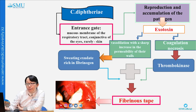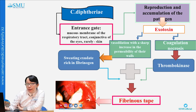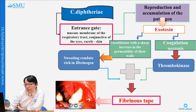Entrance gates are the mucous membranes of the respiratory tract, conjunctiva of the eyes, mucous membranes of the nose, and sometimes skin. At the entrance gate, reproduction and accumulation of Corynebacterium diphtheriae occurs. It produces exotoxin, which causes coagulation necrosis. This is followed by an increase in concentration of thrombokinase, and the exotoxin causes vasodilation with a sharp increase in permeability of vessel walls, leading to sweating of exudate rich in fibrinogen.